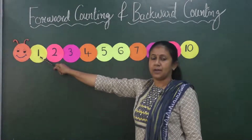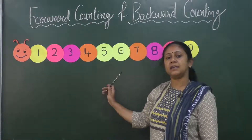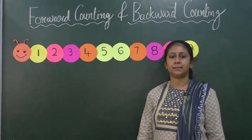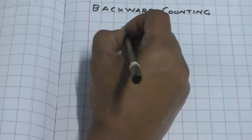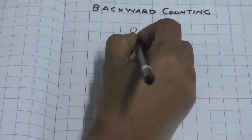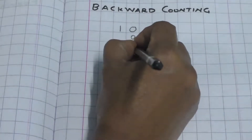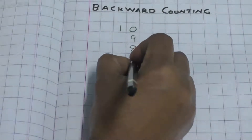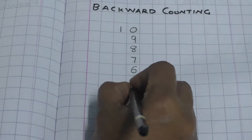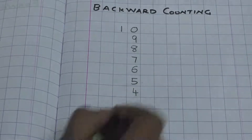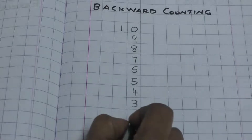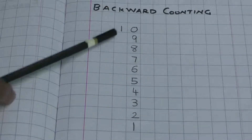Now let's write the numbers for backward counting. We are going to start writing from 10: 10, 9, 8, 7, 6, 5, 4, 3, 2, 1. This is backward counting.